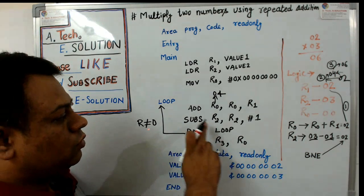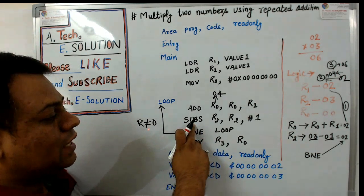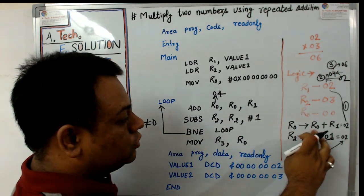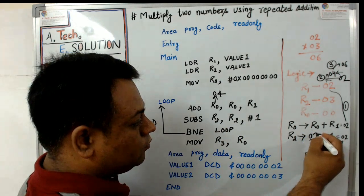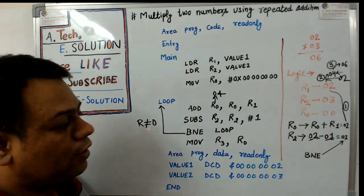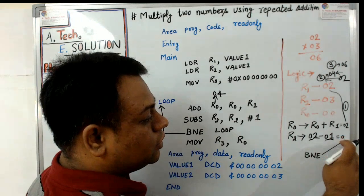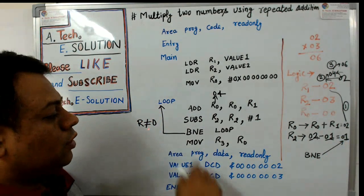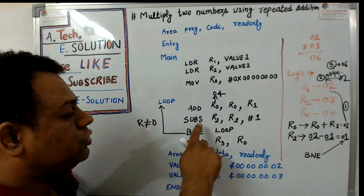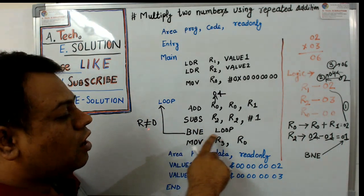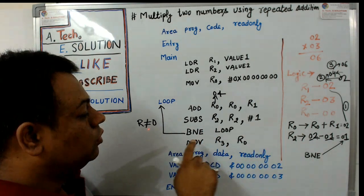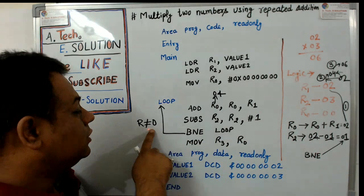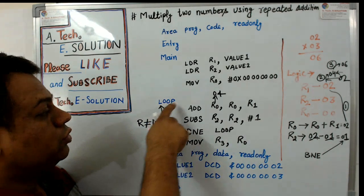The next instruction executes: r2 contains the value 0x02, which is subtracted by 0x01, giving a result of 0x01. The BNE instruction checks r2 — if r2 is equal to 0 it moves to the next instruction. In this case r2 is not equal to 0, so it moves further back to the loop.